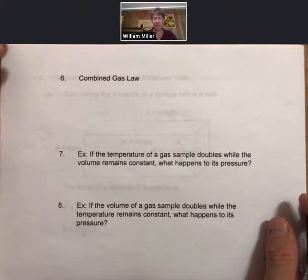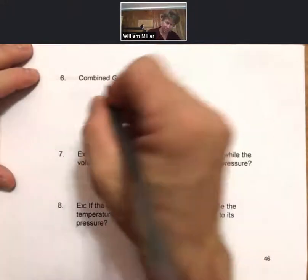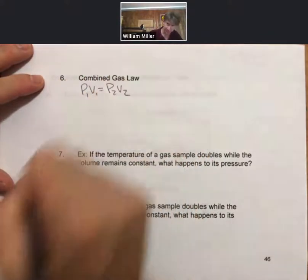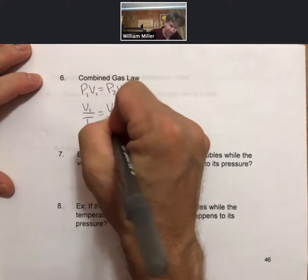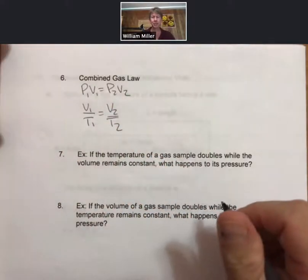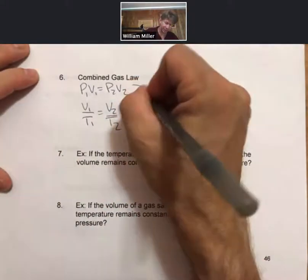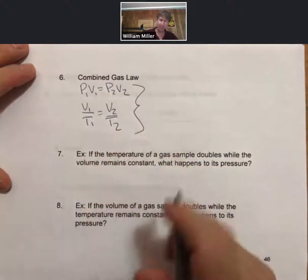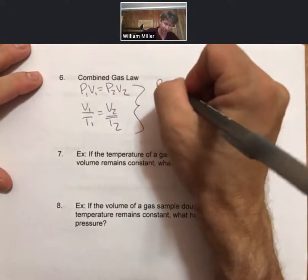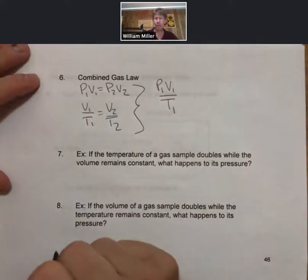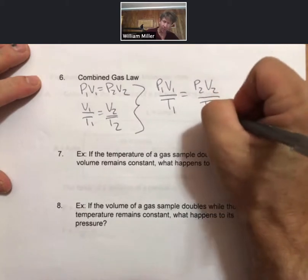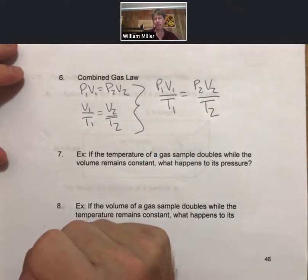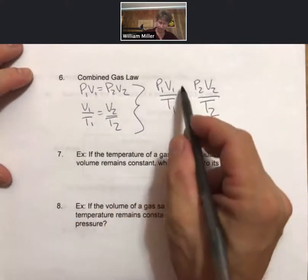Now we can talk about the combined gas law, so let's put them together. We've got P1V1 equals P2V2, and we've got V1 over T1 equals V2 over T2. I'm not going to attempt to prove this at all, but you can put them together to get P1V1 over T1 equals P2V2 over T2.